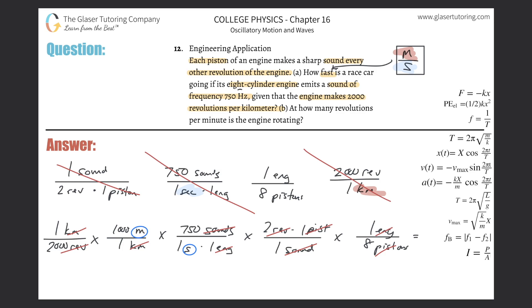When you read the problem it seems overwhelming, but laid out this way it's not terrible. Calculating: 1,000 × 750 × 2 divided by 2,000 × 8 gives approximately 93.8 meters per second. You can convert to other speed units from there. That takes care of part A.